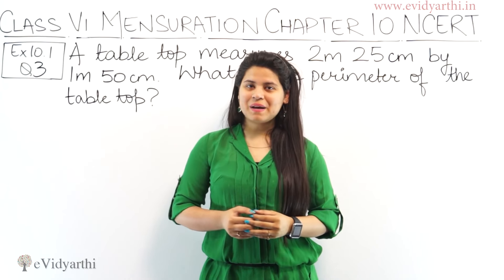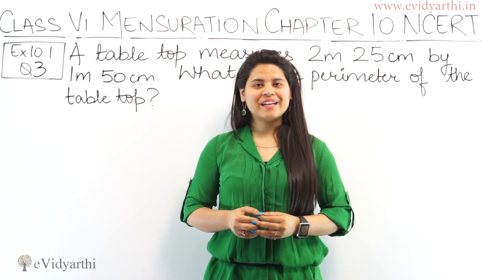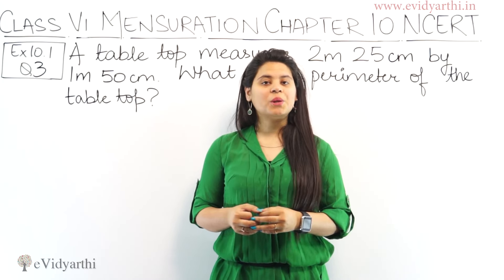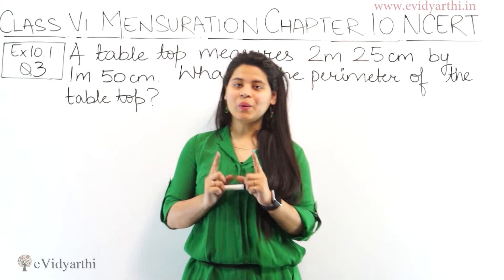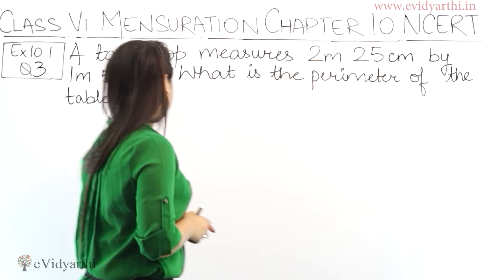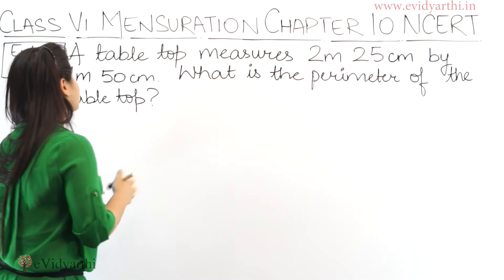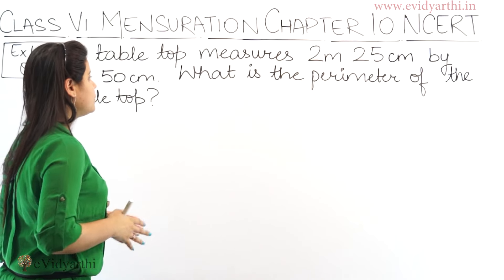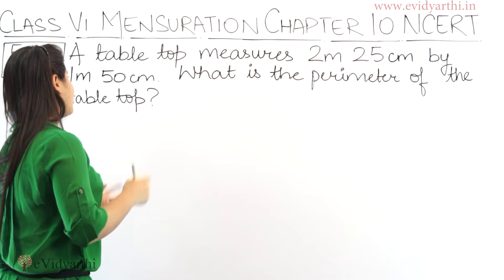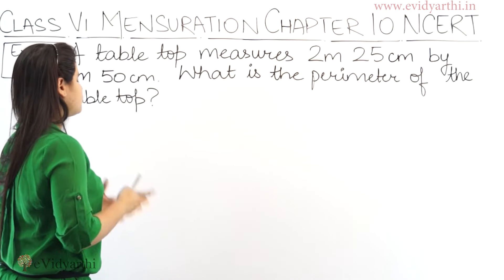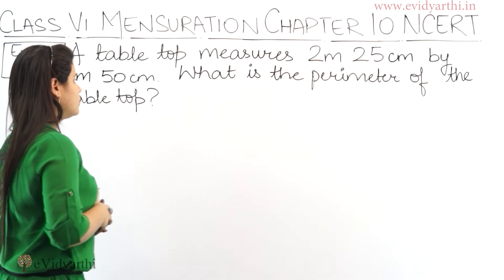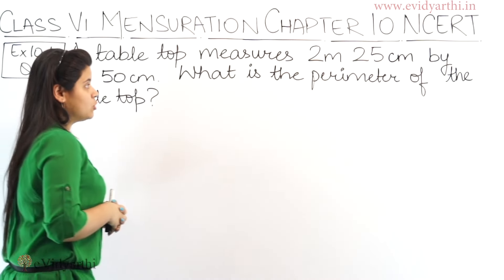Hello everyone, this is Manasi from A.V.T.A.D. George and now we are starting with question number 3, exercise 10.1. In this question we have a table top that measures 2 meter 25 centimeter by 1 meter 50 centimeter. What is the perimeter of the table top?